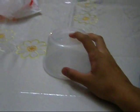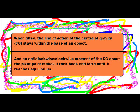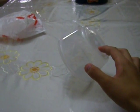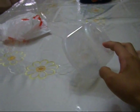A stable equilibrium is defined by the following: when tilted, an object with stable equilibrium has its line of action of the center of gravity stay within the base of itself. An anti-clockwise or clockwise moment is thus created, and that causes the object to return to its original position. Because it has stable equilibrium, it will return back to its original position after being tilted.